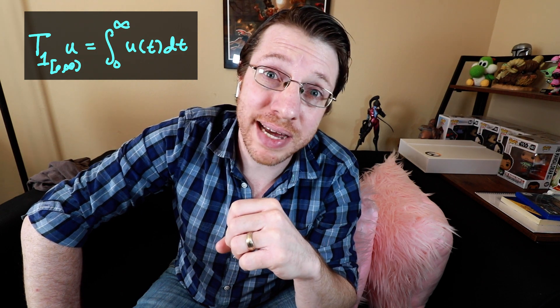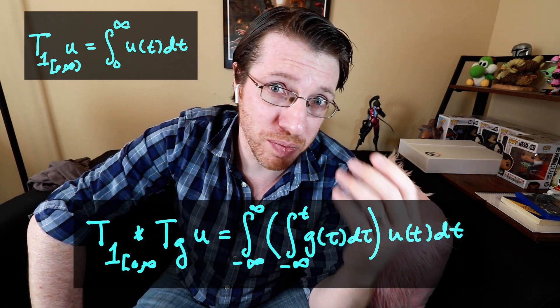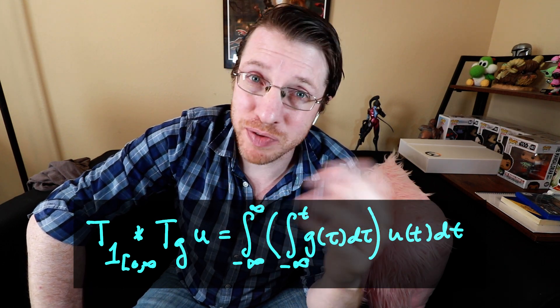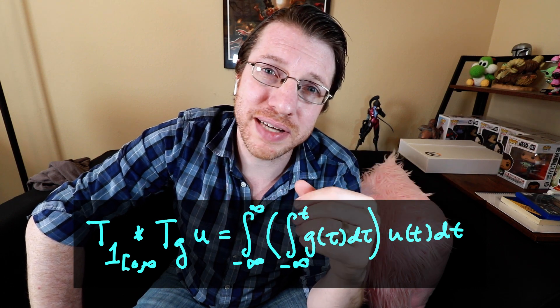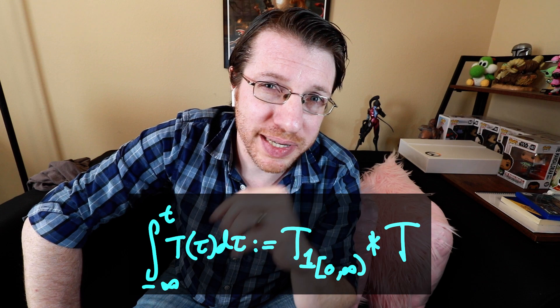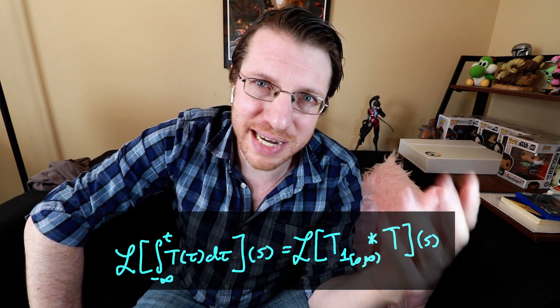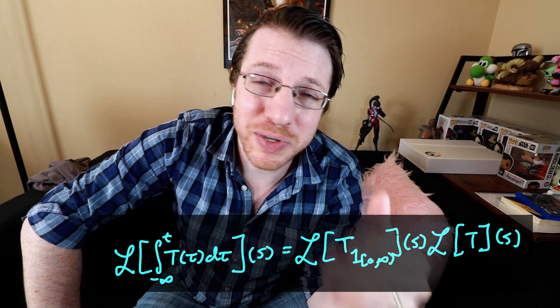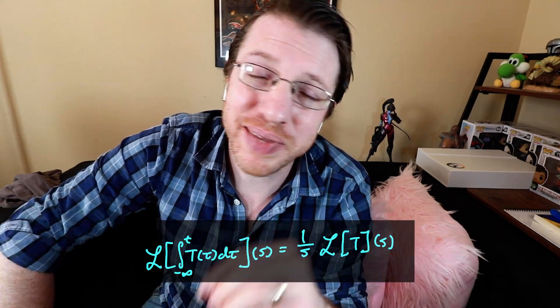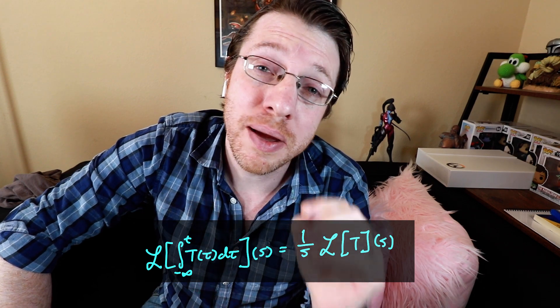Now I'm going to look at the Heaviside function as a distribution. As a distribution, the Heaviside function is the integral of a function inside our space L. I can take the Heaviside distribution and convolve it with another distribution. By analogy — since we know that if that distribution corresponded to a regular distribution this would give its antiderivative — we let this become our definition of an antiderivative of a distribution. Taking the Laplace transform of this antiderivative gives us the Laplace transform of the Heaviside distribution, which is 1/s, times the Laplace transform of our distribution — agreeing with what we saw for Laplace transforms of antiderivatives in ordinary differential equations.